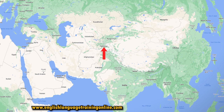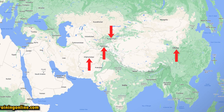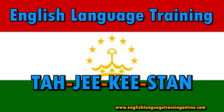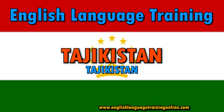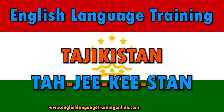It shares borders with the following four countries: Afghanistan, China, Kyrgyzstan, and Uzbekistan. You pronounce Tajikistan like this: ta-ji-ki-stan, ta-ji-ki-stan, Tajikistan. Subscribe for more videos from English Language Training.